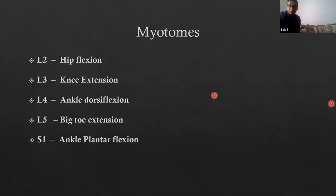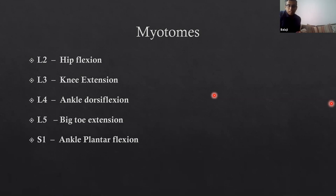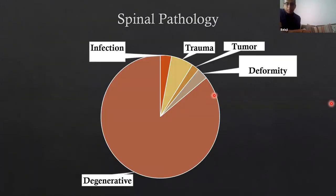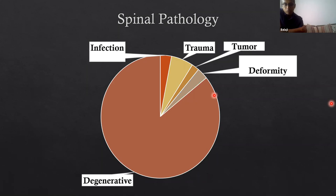That covers the anatomy. The most important things are knowing the nerve distribution, the myotomes, and the dermatomes — these are what will help you with your examination. You also need to know what pathologies are associated with spinal problems, so you know what to ask patients in their history. When you see a patient with a spinal pathology, 85% will have a degenerative pathology. Less than 10% will have sinister pathologies like infection, trauma, or tumor. Deformity accounts for less than 2 to 3%.